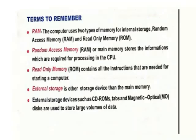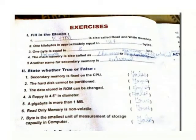This computer uses 2 types of memory for internal storage: Random Access Memory — RAM, and Read-Only Memory — ROM. External storage is storage devices other than main memory, such as CD-ROM. It can store large volumes of data. Fill in the blank: 1 kilobyte is approximately equal to 1024 bytes. 1 byte is equal to 8 bits. Primary memory is also called main memory or internal memory.